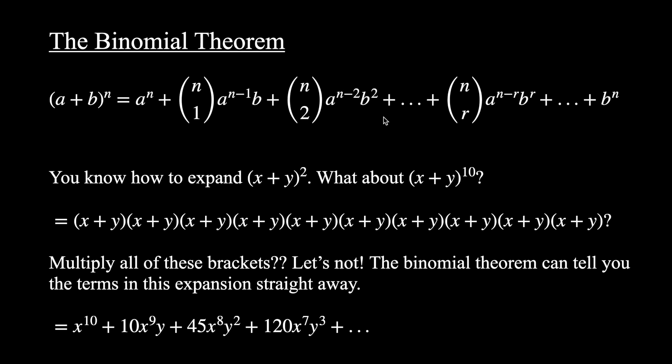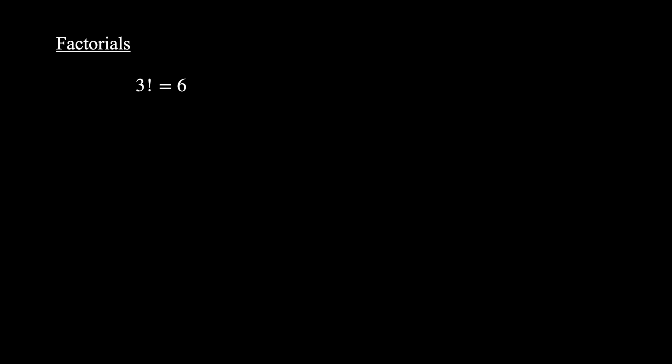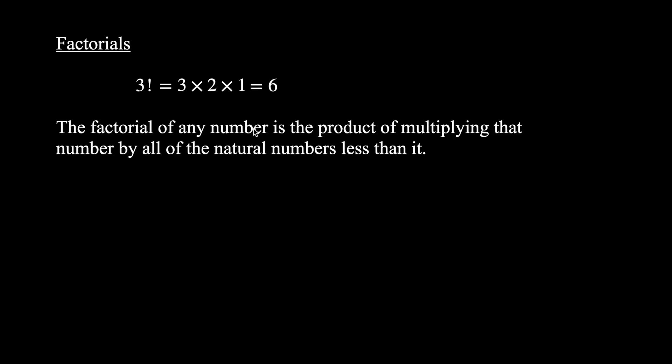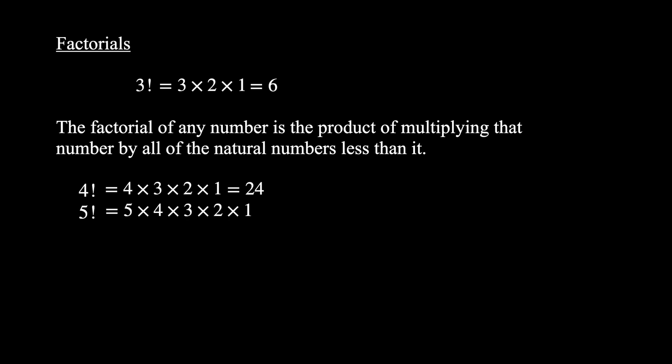To understand this theorem we need to first talk about factorials and the combination formula. What are factorials? Factorials are where you multiply a number by all of the whole numbers less than it. So three factorial is 3 × 2 × 1 = 6. Four factorial is 4 × 3 × 2 × 1 = 24. Five factorial is 5 × 4 × 3 × 2 × 1 = 120, and so on.